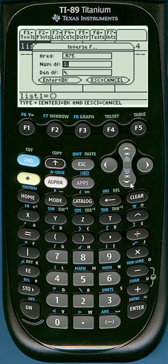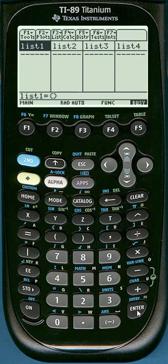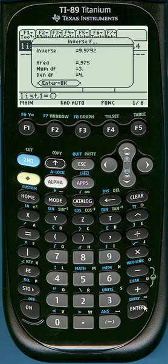Our numerator degrees of freedom is n minus 1 from the sample which had larger sample standard deviation. That was the 4 sales rep sample, and minus 1 gives us 3. The other sample had 5 sales reps, and minus 1 gives us 4. Click OK or enter to calculate, and we get an inverse F of 9.9792.